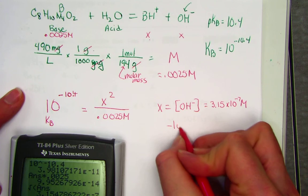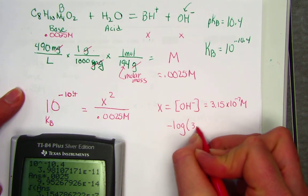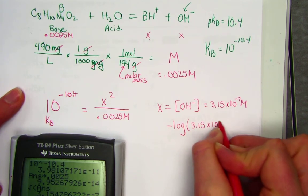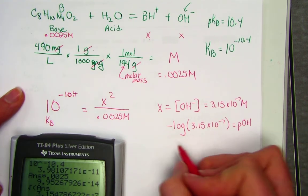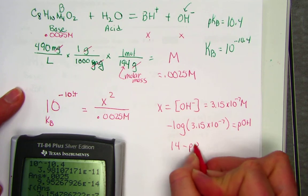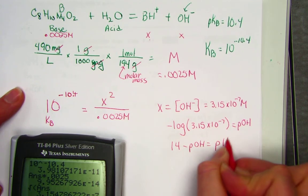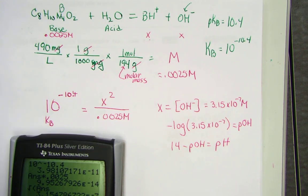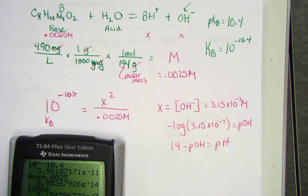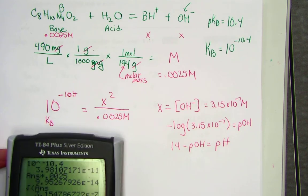If I negative log that value, I get something called pOH. And of course, 14 minus the pOH will be what we were asked to solve for the pH of our solution. And it makes sense that we're looking for a number higher than 7 so that it falls into the pH of a base.